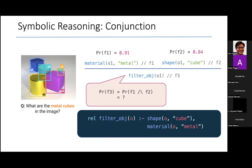And now we can do probabilistic reasoning over these rules that we have written. For example, we can assign Boolean variables, such as F1, F2, and F3, to each of the facts that we are deriving. We can ask, for example, what is the probability that O1 is an object that is metallic and a cube?